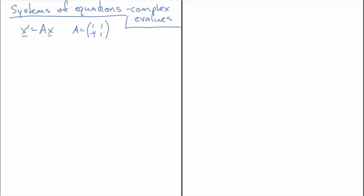Hello and welcome to a video on differential equations. In this video I'm going to talk about systems of differential equations — two by two matrices where the eigenvalues of the matrix are complex. Here we have the equation X prime equal AX where A is the matrix [1, 1; -4, 1], and what we'll do as usual for solving this is we'll find the eigenvalues and eigenvectors.